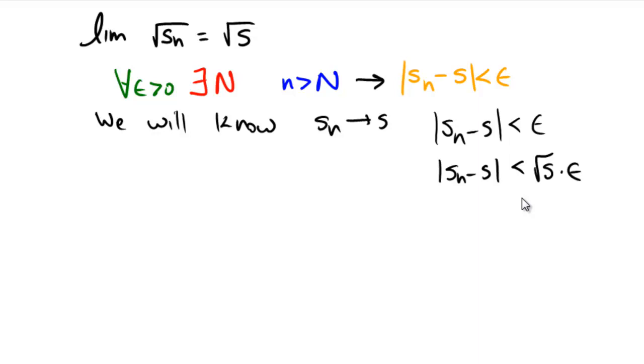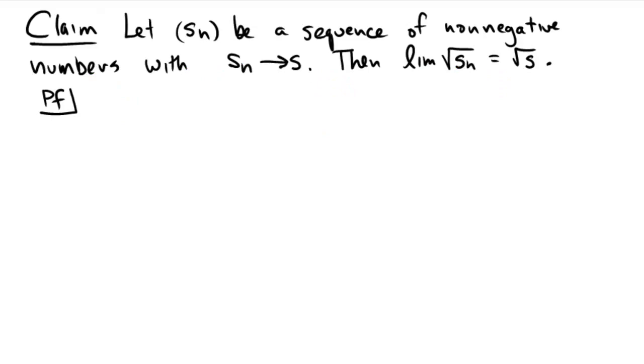Let's try it. Let Sn be a sequence of non-negative numbers with Sn limiting towards S, and I also now remember that I need to make that non-zero, and then we're going to show that the limit of the radical of each term of the sequence will also go towards S.